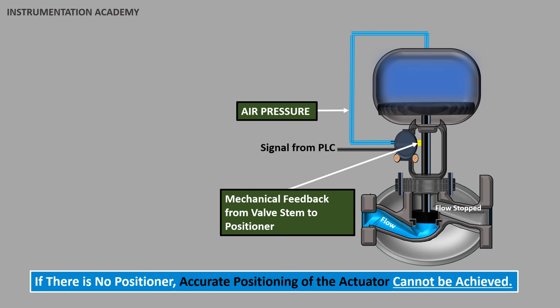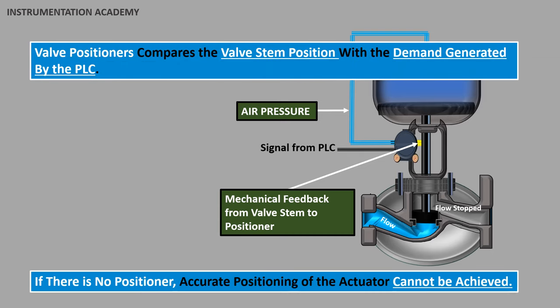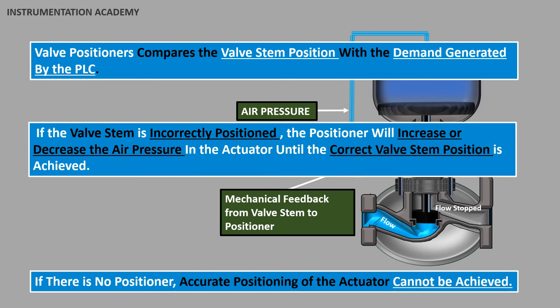The valve positioner compares the valve stem position with the demand generated by the controller like PLC. If the valve stem is incorrectly positioned, the positioner increases or decreases the air in the actuator until the correct valve stem position is achieved.